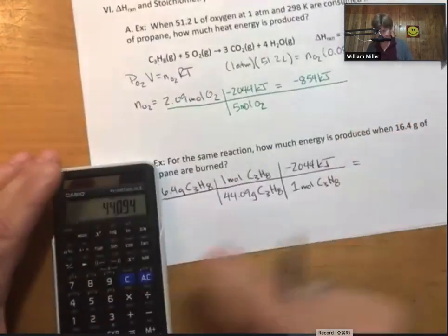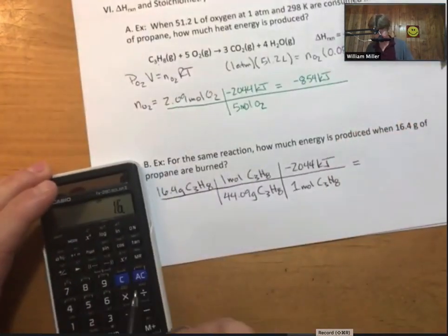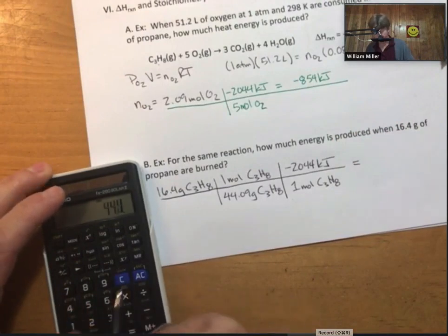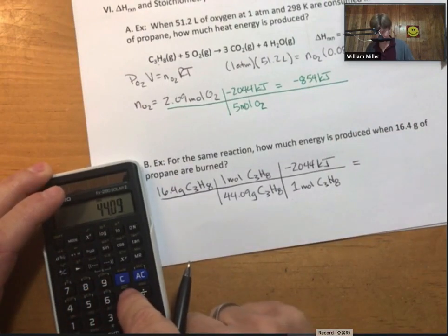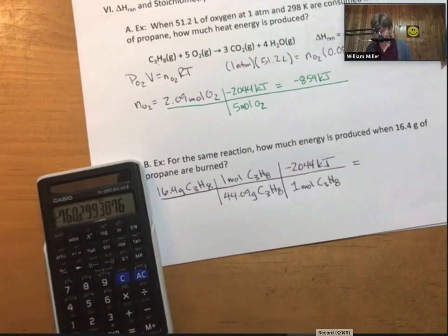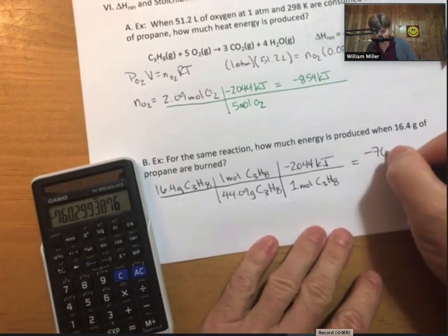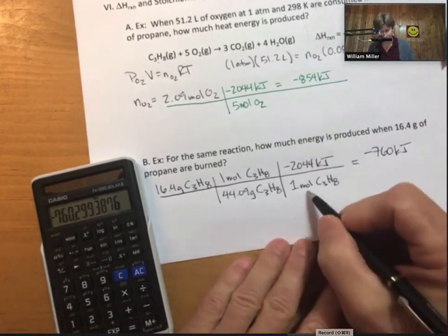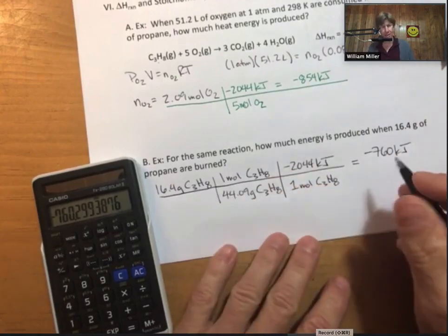Well, now, let's multiply this out. And this time, I get minus 760 kilojoules. It is just kilojoules because all my other units cancel out.